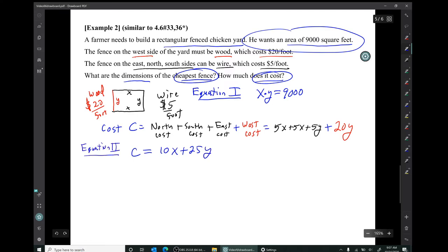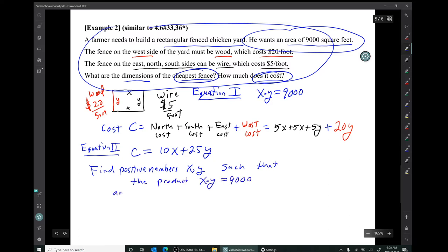So our given word problem, we can now re-express as an abstract math problem. So our problem is to find positive numbers x and y, such that the product x times y is 9,000, and this particular sum, 2x plus y equals c, is minimized. Well, that's the exact problem that we solved in the previous video in example two.